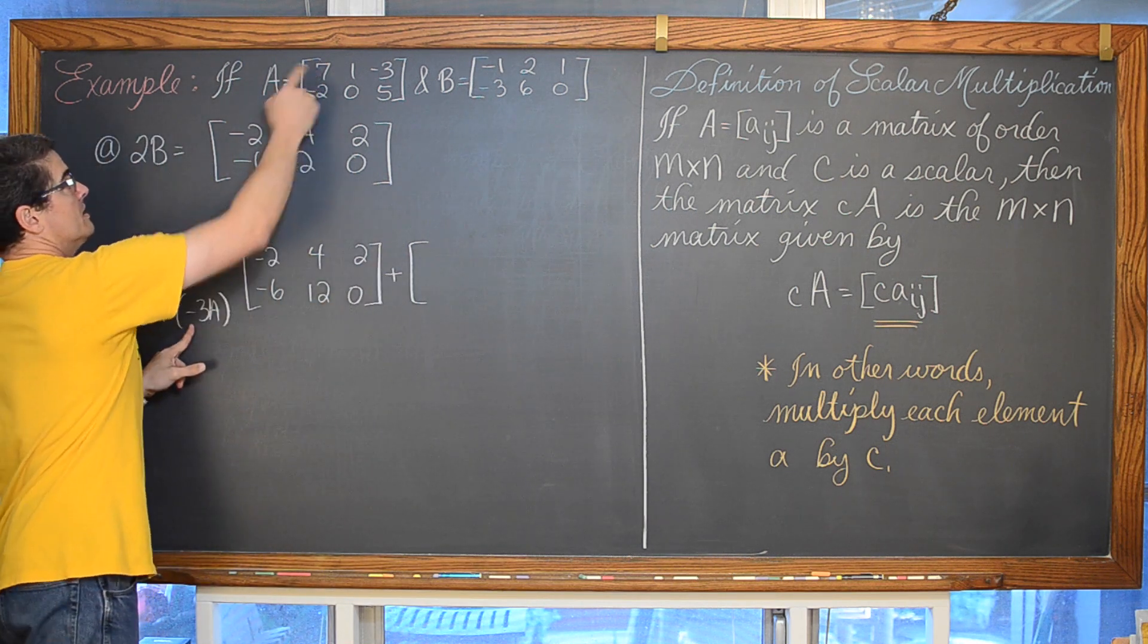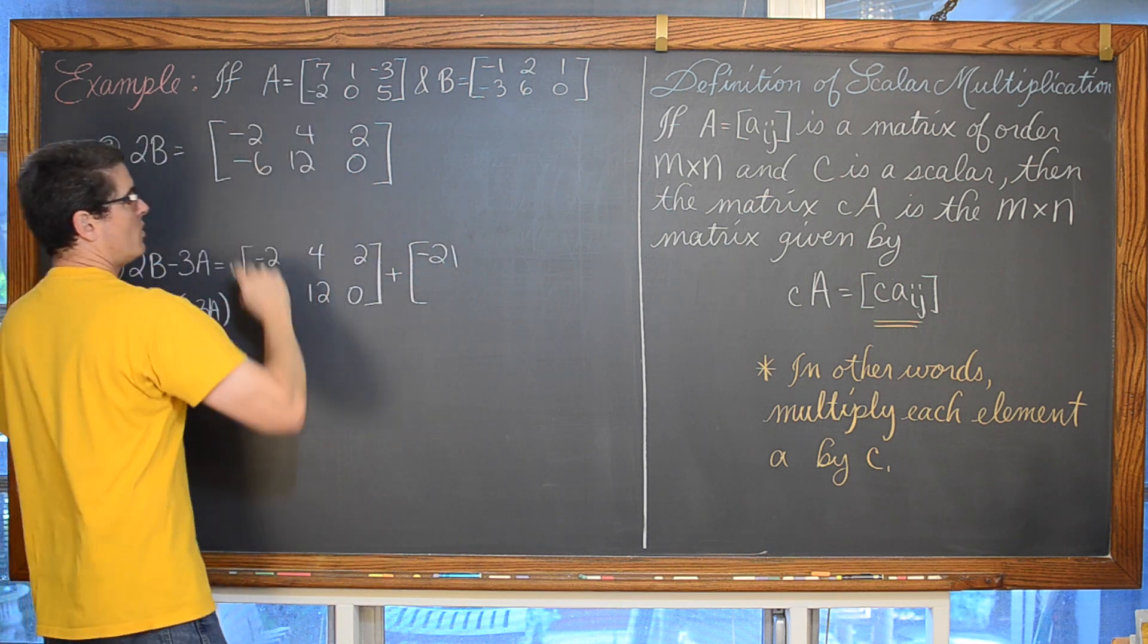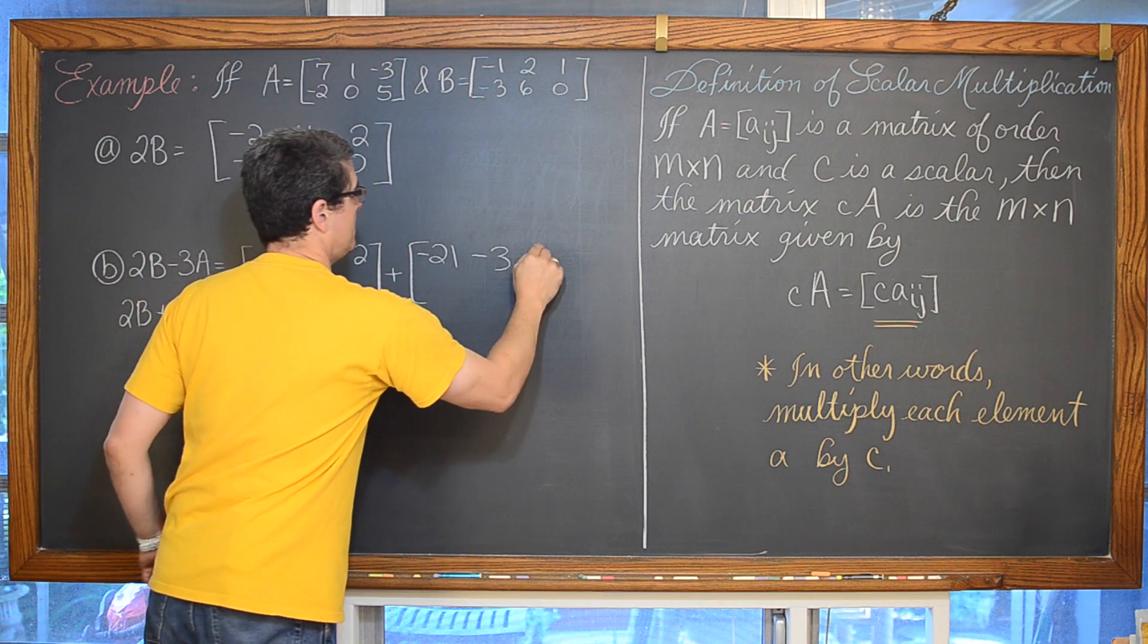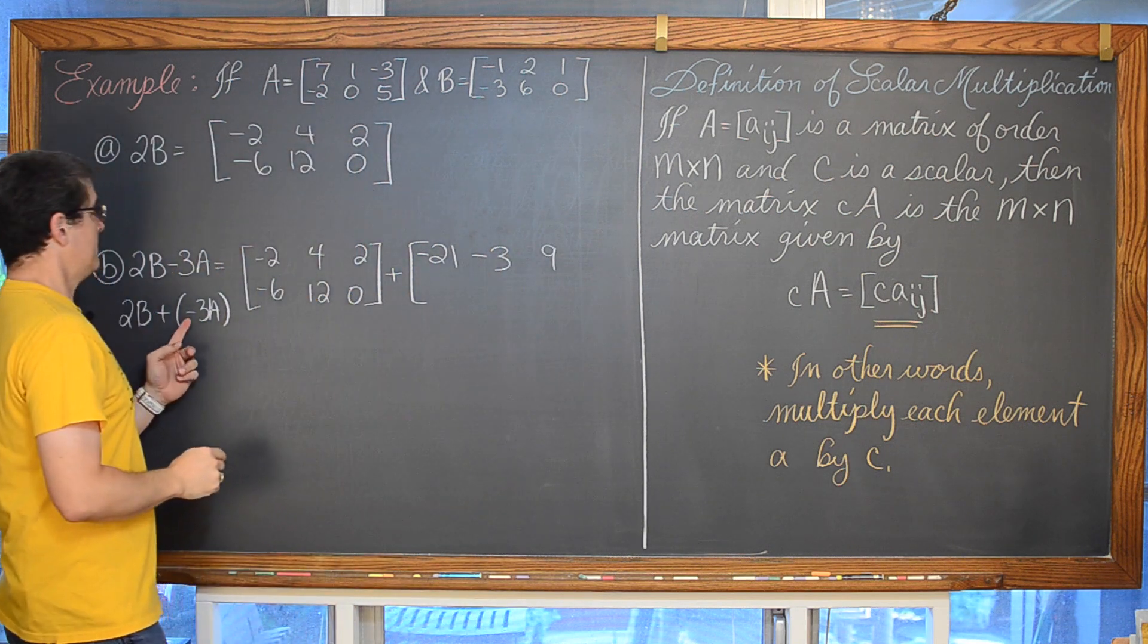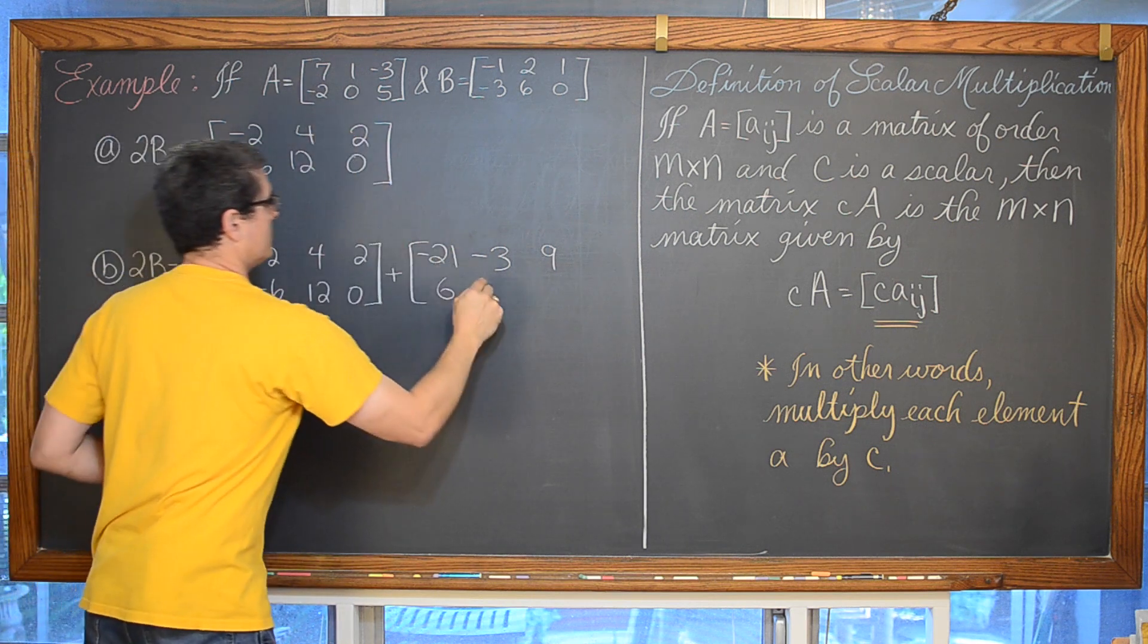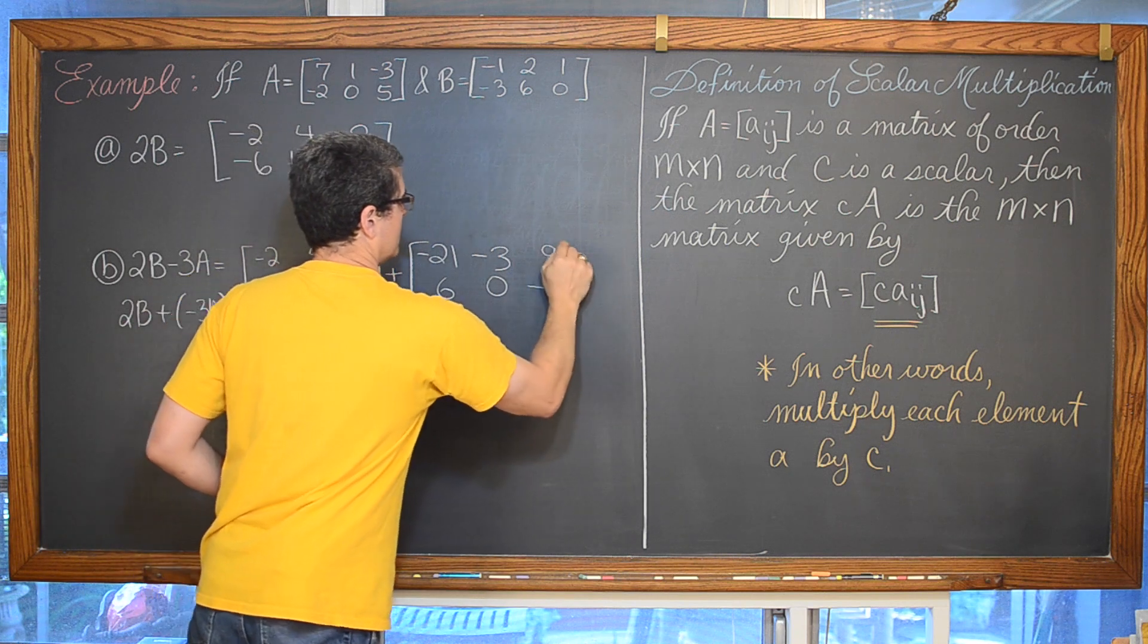Let's do 2B plus negative 3A and apply that scalar multiple of negative 3 through matrix A and then I don't have to worry about my signs so much. So negative 3 times 7 is negative 21. Negative 3 times 1 is negative 3. Negative 3 times negative 3 is positive 9. Negative 3 and negative 2 is 6. And then we have 0 and negative 15.